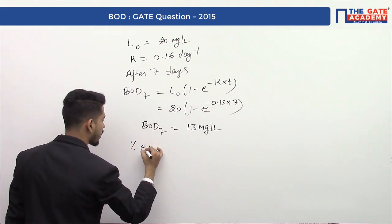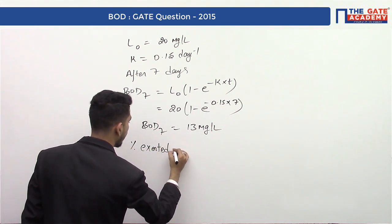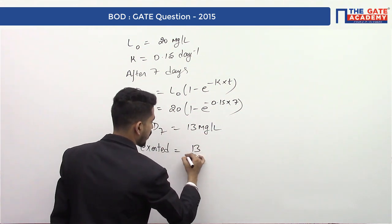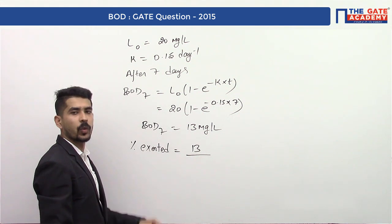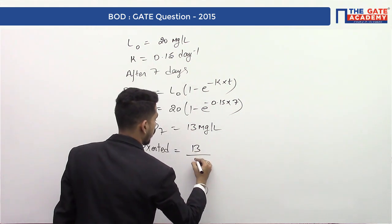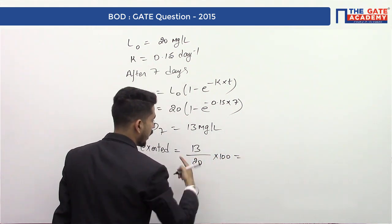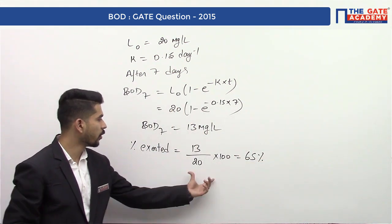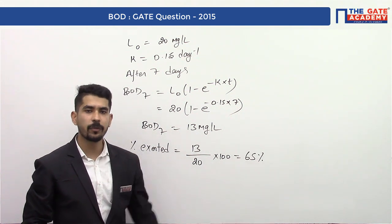Let us calculate what is the percentage exerted or percentage satisfied. It is nothing but this value of BOD7 divided by L naught times 100, which is equal to 13 divided by 20 times 100, which is equal to 65 percent.